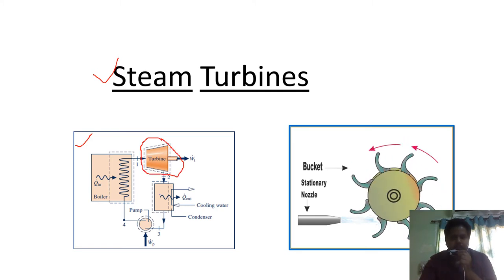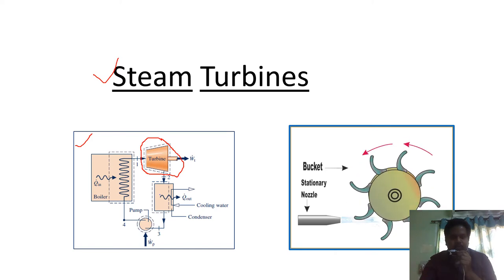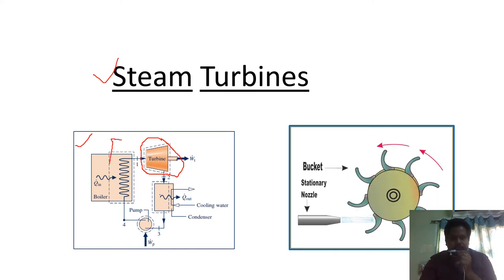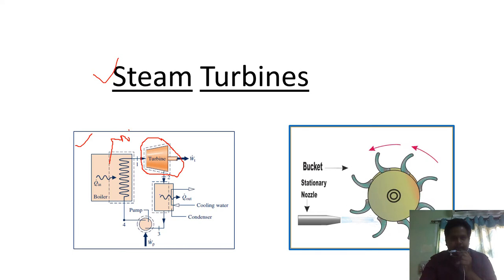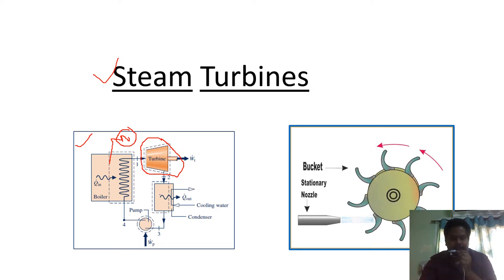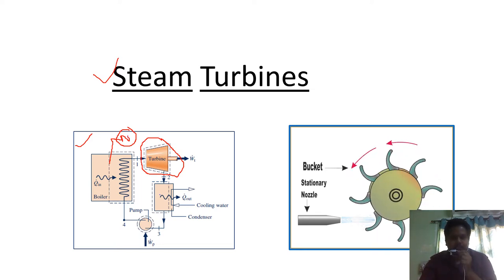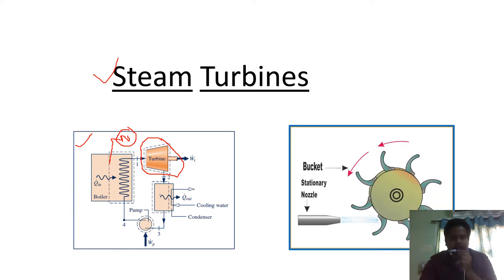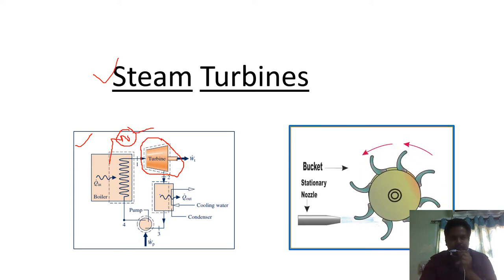In the boiler, water will be converted into steam. That steam will enter into the nozzle. The function of the nozzle is it converts the pressure energy into kinetic energy. After passing through the nozzle, the steam at high velocity will enter into the turbine.